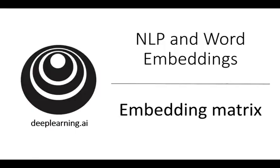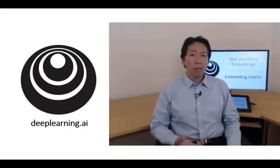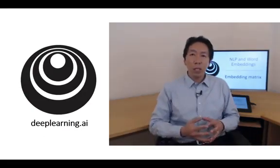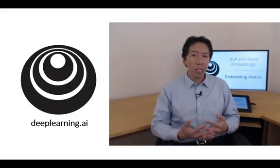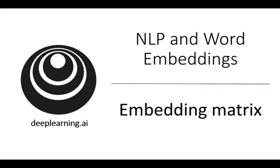Let's start to formalize the problem of learning a good word embedding. When you implement an algorithm to learn a word embedding, what you end up learning is an embedding matrix. Let's take a look at what that means.